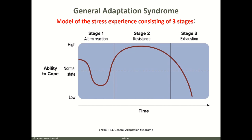GAS — General Adaptation Syndrome — is a model of the stress experience consisting of three stages. The ability to cope is high at the beginning during the alarm reaction. If you cannot cope, ability decreases over time and moves to the resistance stage. If you still cannot recover, stress level progresses to the third stage — exhaustion — where the ability to cope becomes very low or minimal.